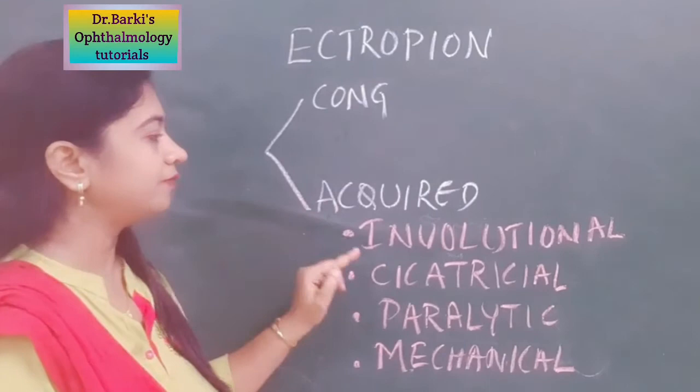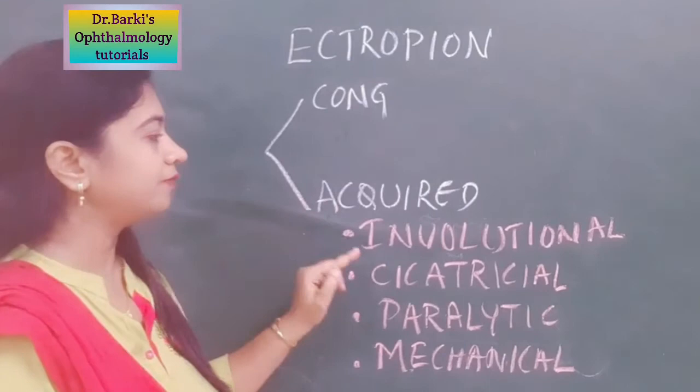So broadly we classify ectropion into congenital type and acquired. In acquired, we have involutional, cicatricial, paralytic, and mechanical.